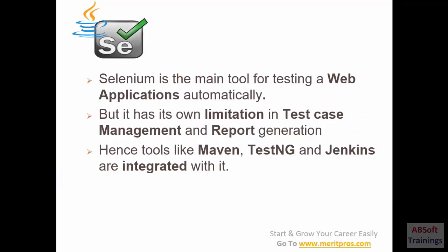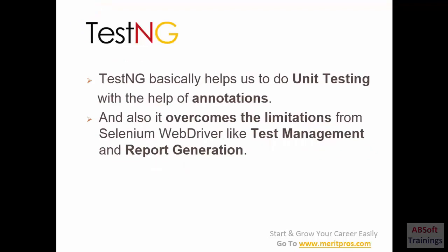Coming to the testing phase: to automate a web application we use Selenium with Java, which is the major tool for automatically testing a web application. However, Selenium has limitations like managing test cases and generating reports — by default Selenium does not generate reports. To overcome this, we integrate Selenium with Maven, TestNG, and Jenkins. TestNG helps us do unit testing with the help of annotations, and based on those annotations the test execution flows. TestNG also overcomes Selenium WebDriver limitations like test management and report generation.